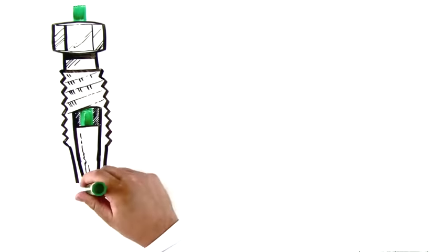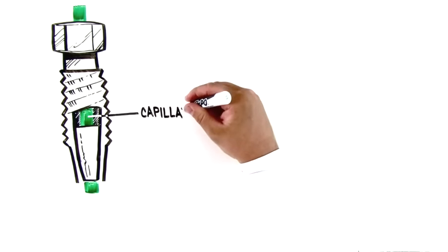Traditionally, these connections were made by a three-piece system consisting of a capillary, a ferrule, and a separate nut.